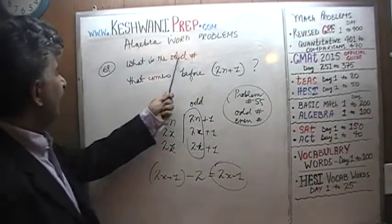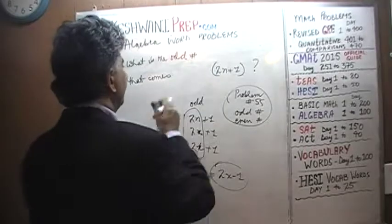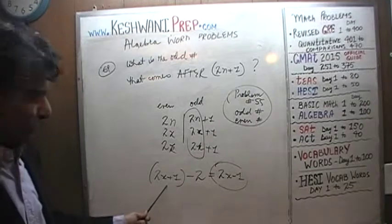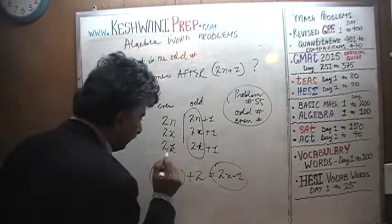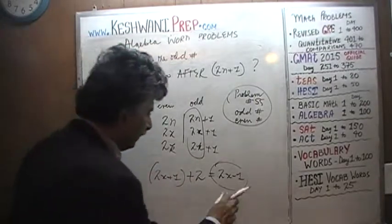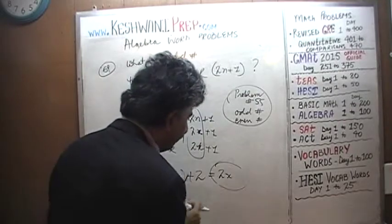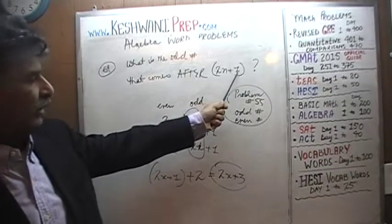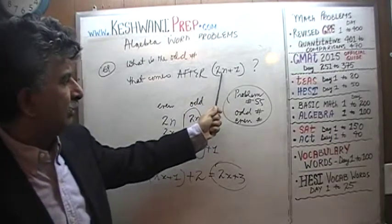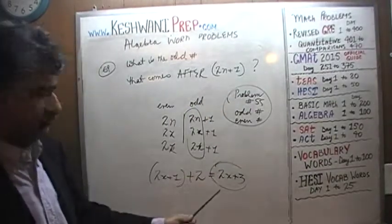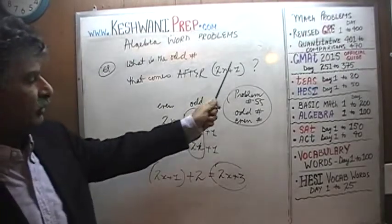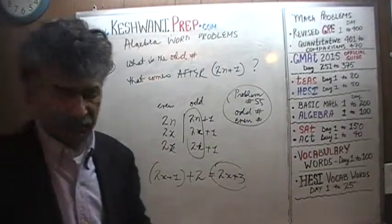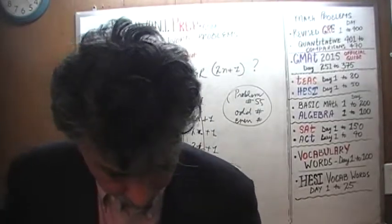If the question had asked us for the odd number that comes after 2n plus 1, it would simply be 2x plus 1 plus 2. In which case the number that comes after it is 2x plus 3 — or 2n plus 3. That's the odd number that comes after 2n plus 1.